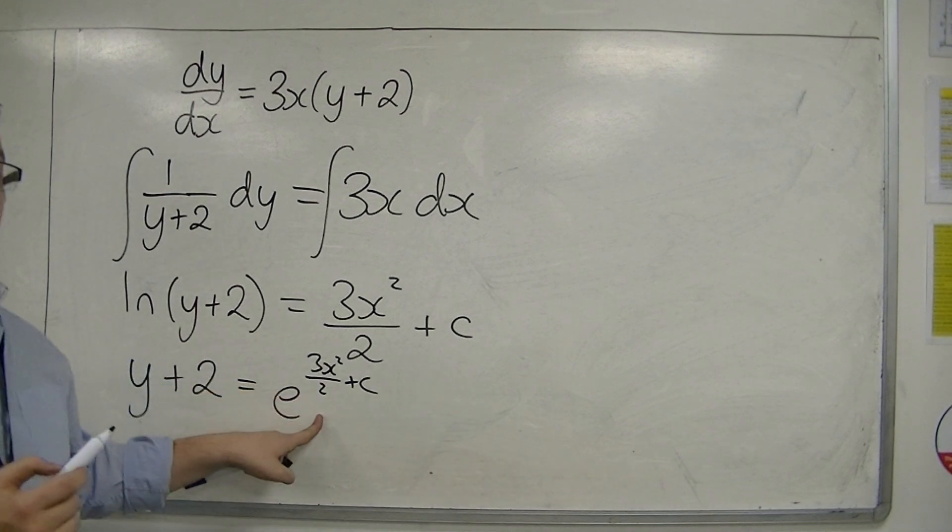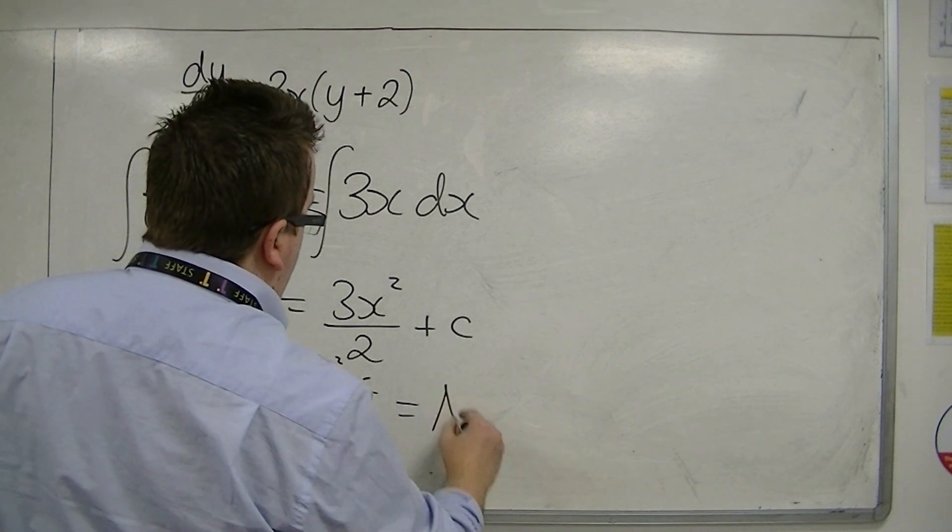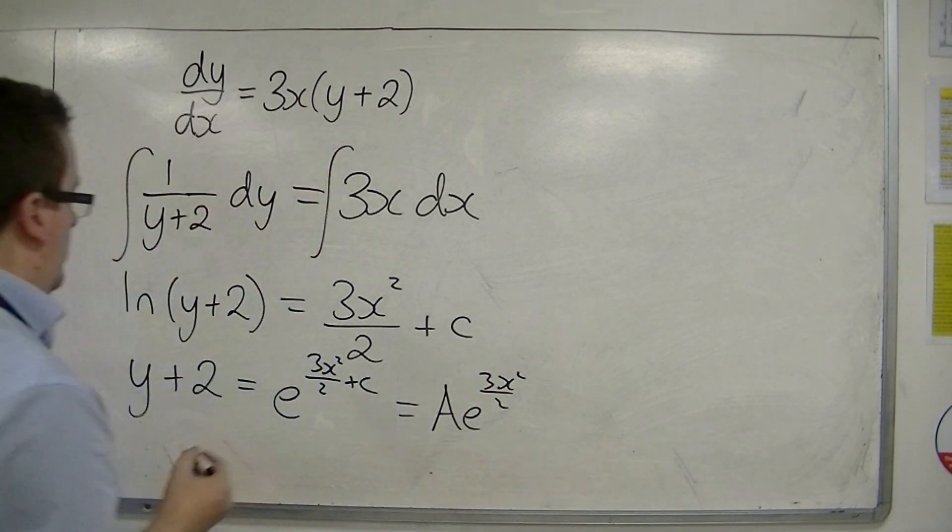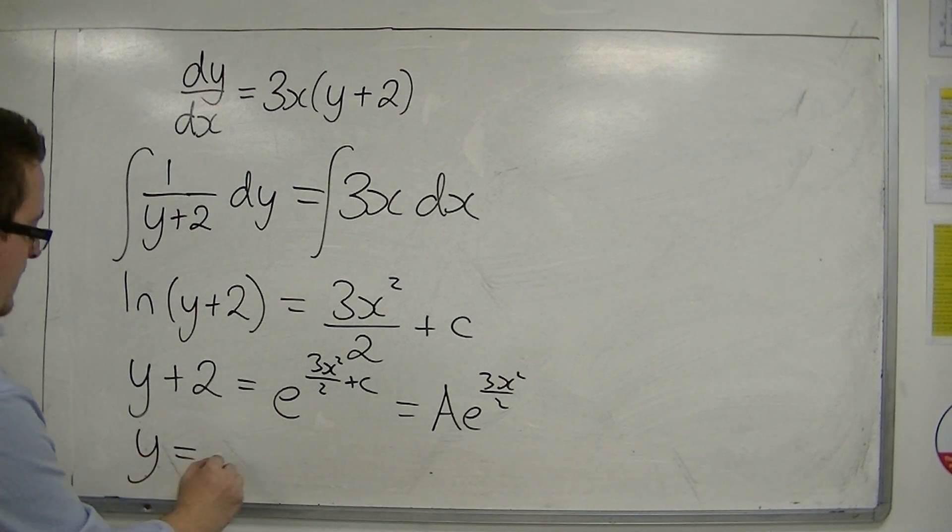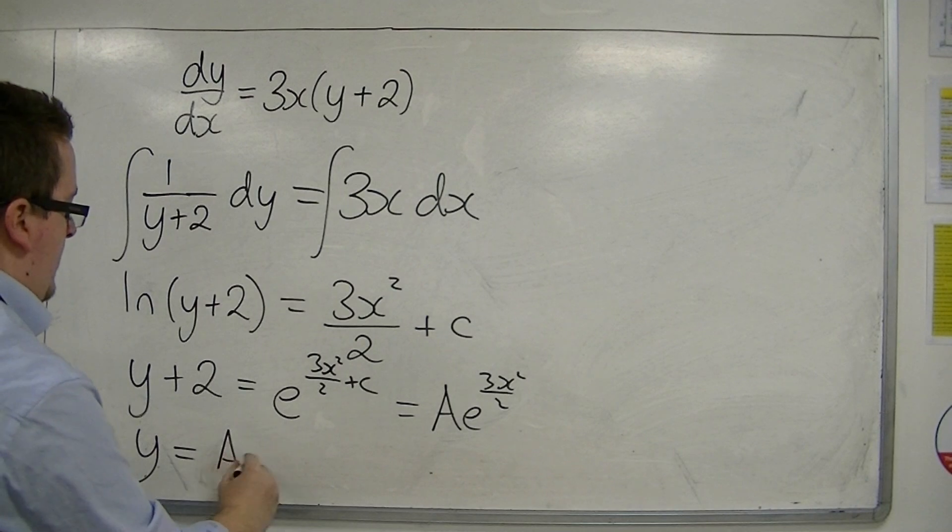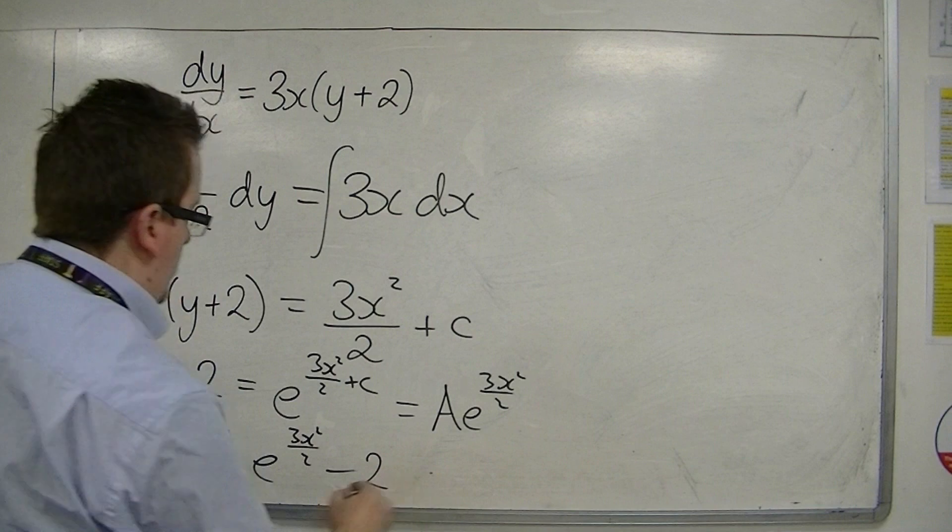Now, using similar methods as I've shown in the previous video, I could write that as Ae to the 3x squared over 2, and then I can subtract 2 from both sides. So, Ae to the 3x squared over 2, take away 2.